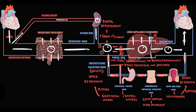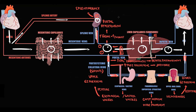After the portal vein obstruction, blood begins to accumulate in the splenic vein and then in the spleen. Increasing blood volume inside the spleen causes spleen distension and enlargement, which we call splenomegaly. Blood also begins to accumulate in mesenteric veins and then in mesenteric capillaries. With increasing blood volume, hydrostatic pressure inside the mesenteric capillaries increases, and increasing hydrostatic pressure inside the mesenteric capillaries causes edema of the mesenteric tissue, resulting in ascites.